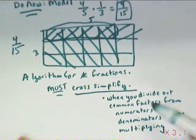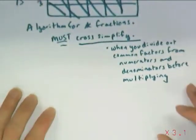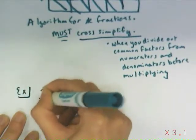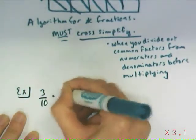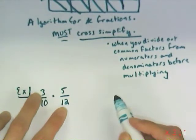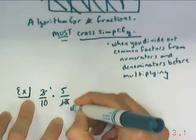So cross-simplifying is the process of dividing out the common factors from the numerators and denominators before multiplying. You're going to see this process done by me a couple times, and then I'm going to ask you to do a couple on your own. So our first example is 3 tenths times 5 twelfths. Before I go crazy and multiply the tops and the bottoms, I look in both directions. I see that 3 over 12 can become 1 over 4.